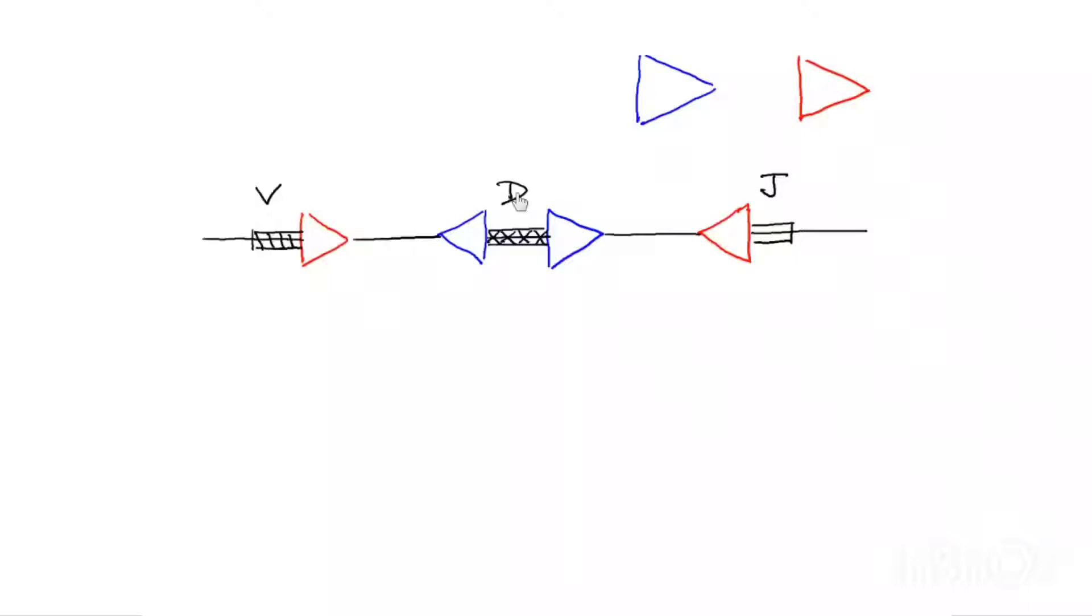And of course, all these segments, there are many other D segments and many other J segments and many other V segments. We're just going to talk about the chosen ones and use hatch marks here to indicate that there's some indeterminate amount of space between these segments that I've drawn. There are two kinds of recombination signal sequences, which are denoted in blue here and red.